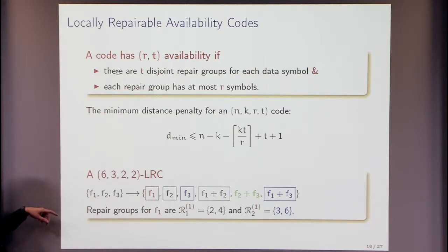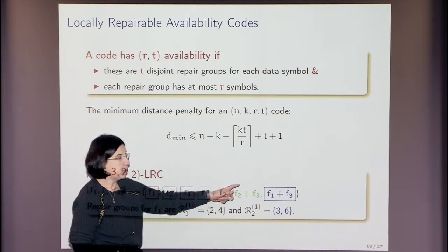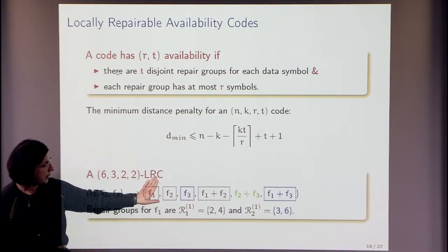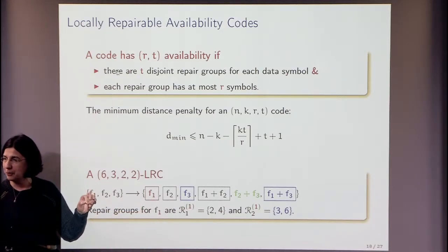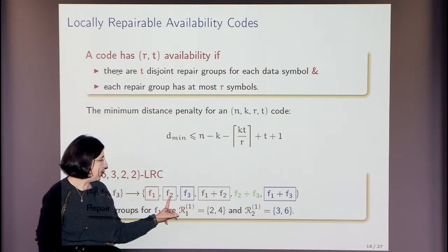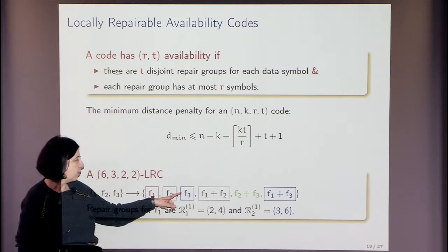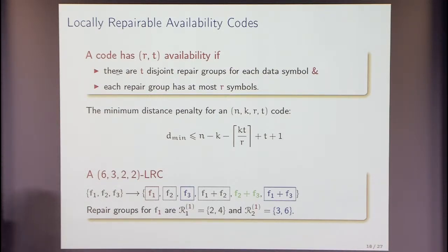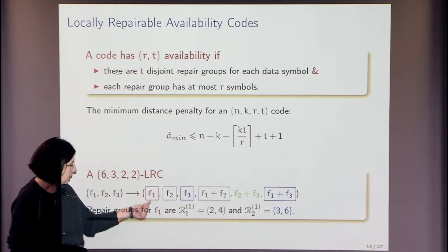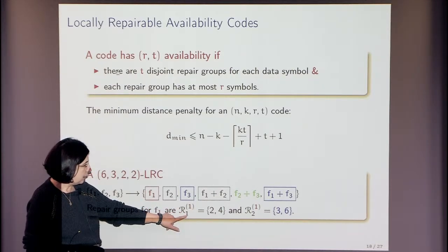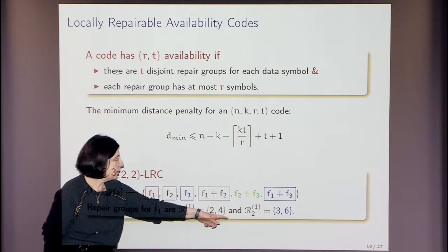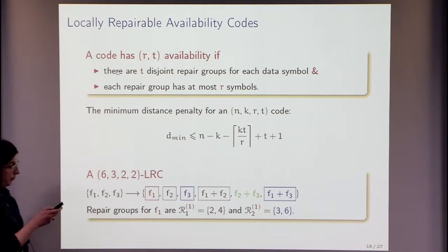Here is an example. Suppose I have three data symbols F1, F2, F3 and three additional coded equations. To access F1, I can ask F1 directly, or if that server is busy, I can ask the black group: F2 and F1+F2 — two equations with two unknowns. Or I can ask the blue group: F3 and F1+F3. So the repair groups for symbol 1 are: the systematic node itself, one repair group containing nodes 2 and 4, and another containing nodes 3 and 6.